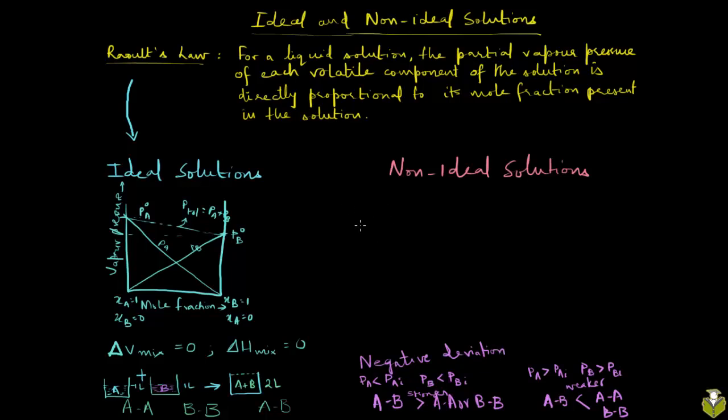Negative deviation. Let's draw the graph of vapor pressure versus mole fraction and see how this looks. You have here again the same thing: XA equals 1, XB equals 1.